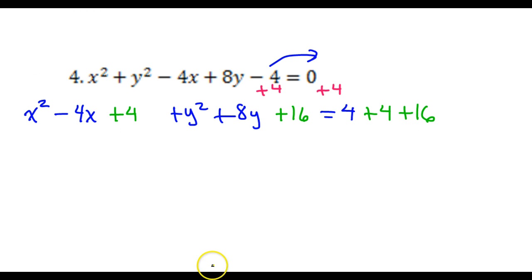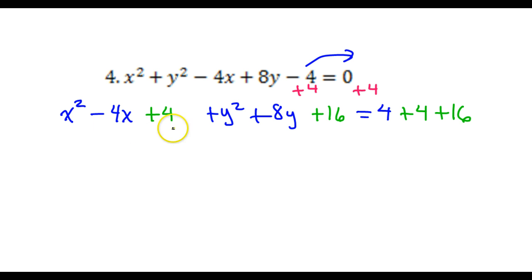Now, completing the square always leaves it so that this will factor as the same thing twice. In this case, x minus 2 times x minus 2. The sign always comes from the middle term.